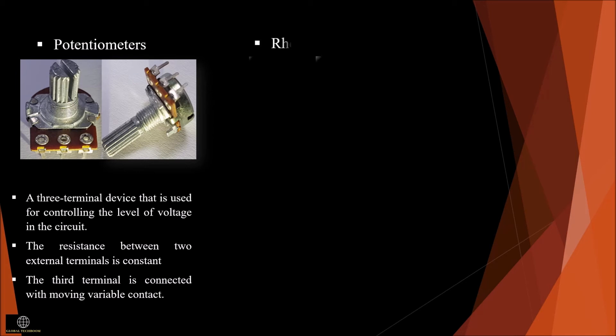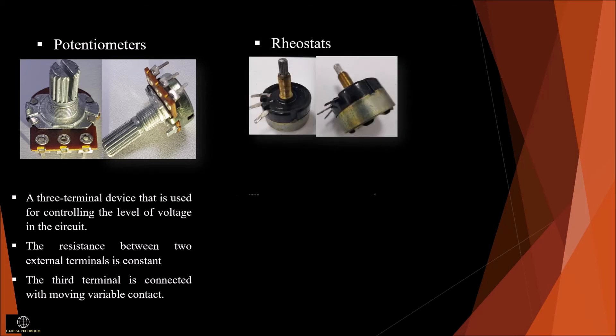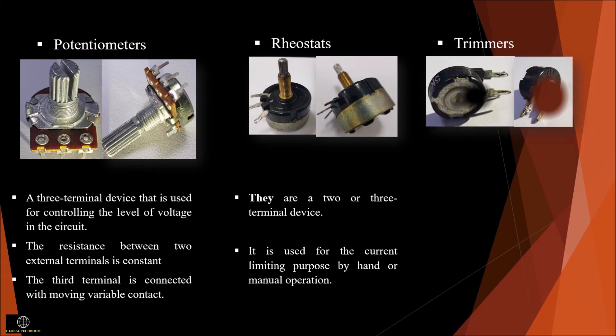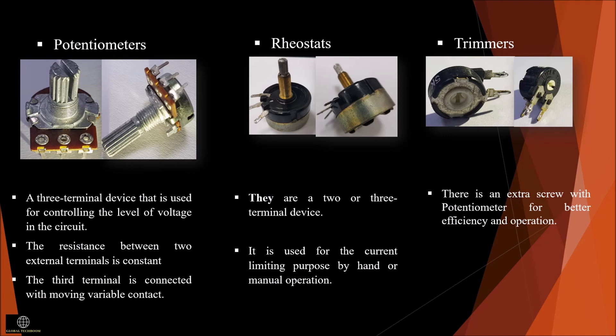A rheostat is a two or three-terminal device used for current limiting purposes by hand or manual operation. Trimmers have an extra screw with a potentiometer or variable resistor for better efficiency and operation, so they are called trimmers. By changing the position of the screw with a small screwdriver, the value of resistance can be changed.